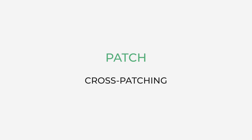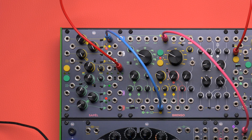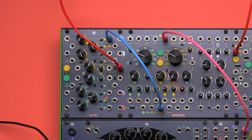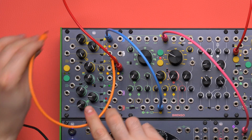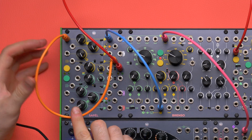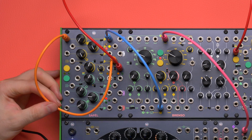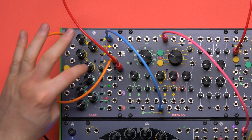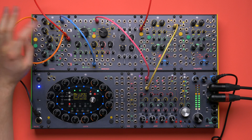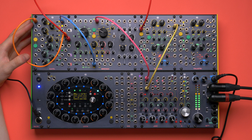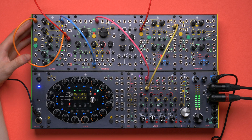For the most extreme example: we are going to keep the n knob all the way down and use the sample and hold output to control the n value. In this way we add a further degree of unpredictability. At every clock impulse to SAPEL we have a different number of possible quantized output voltages. Even though the semitones are always the same, their presence over time is even more random.